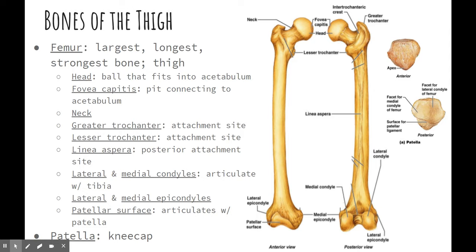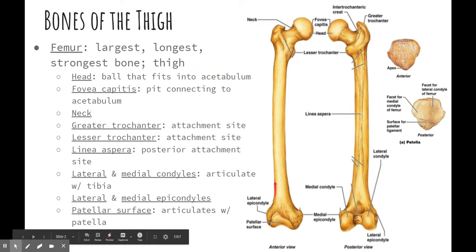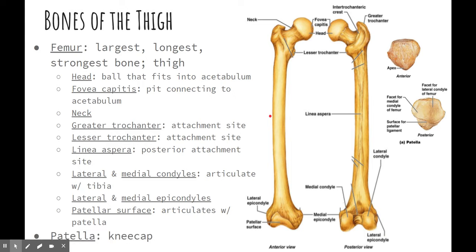The bone of the thigh is the femur. It is the largest, longest, and strongest bone. This is the bone that, if you break it, that is just absolutely excruciating — you really don't want to break this bone. It's broken down into a handful of different parts, just like all of these bones.